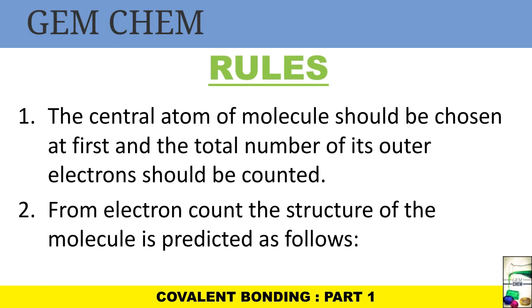Let us see how it is done. Suppose we consider BF3. The central atom in this case is boron. Boron has three outer electrons and it gets three electrons from the three fluorines. So the total valence electrons around boron is six.